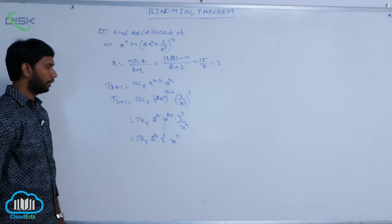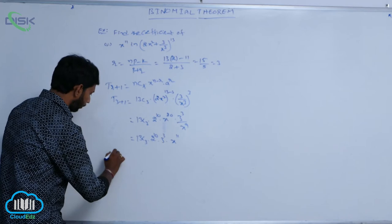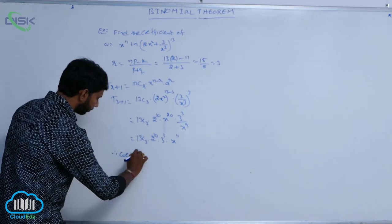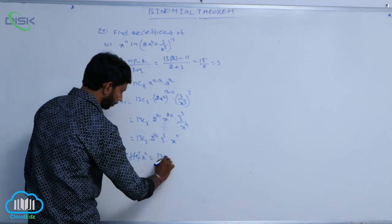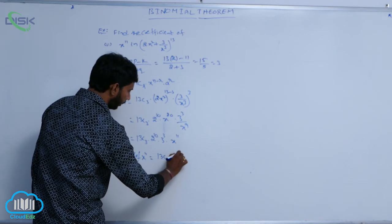Therefore, coefficient of x power 11 is equal to 13 c 3 into 2 power 10 into 3 cube.